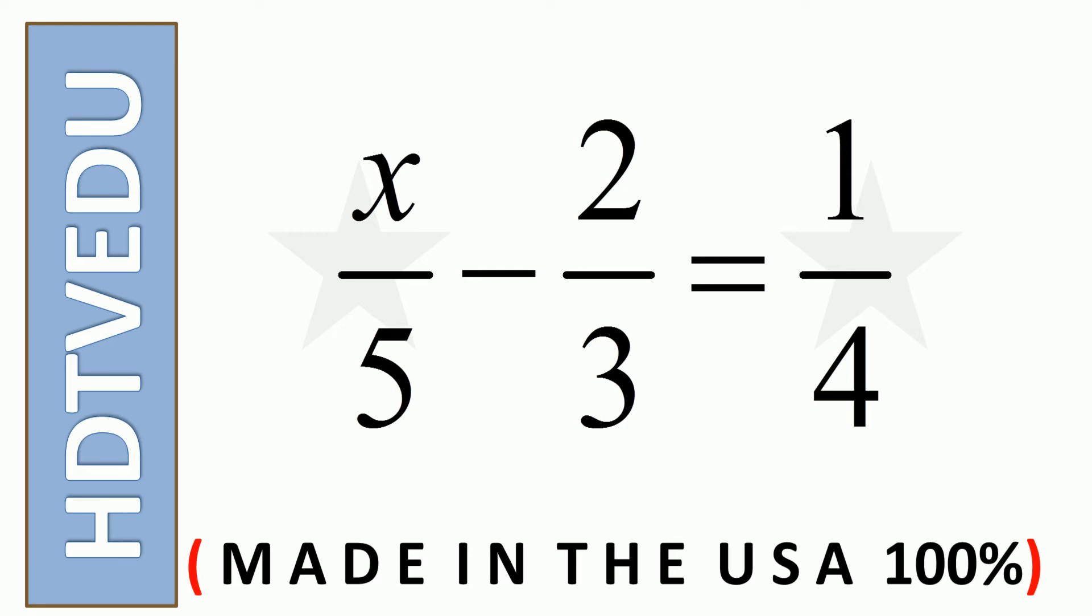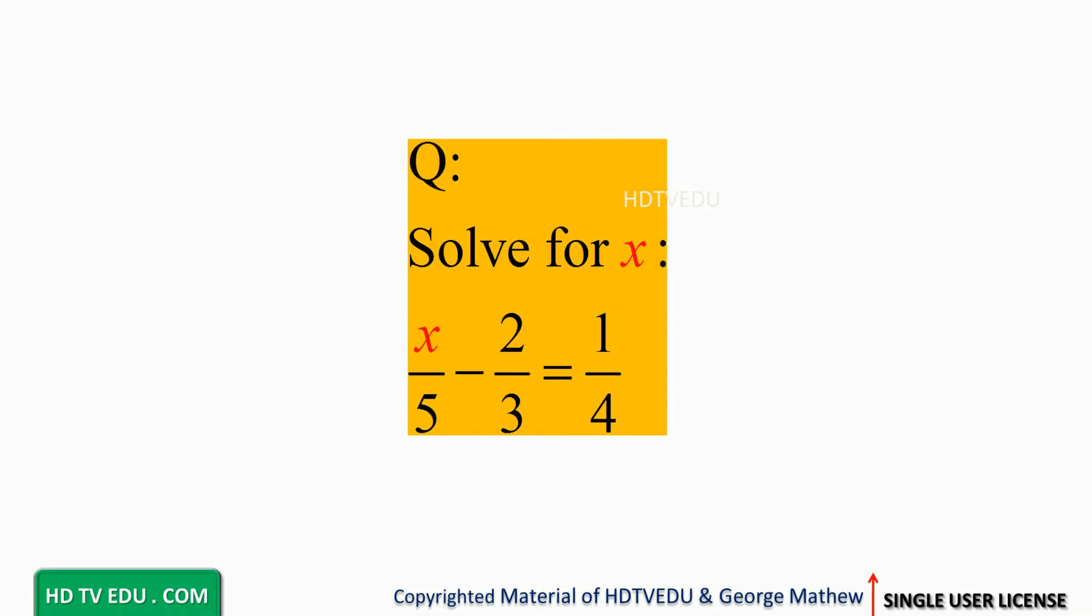x over 5 minus 2 over 3 is equal to 1 over 4. We have fractions. Solve for x. x over 5 minus 2 over 3 is equal to 1 over 4.